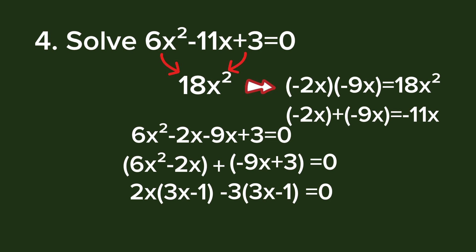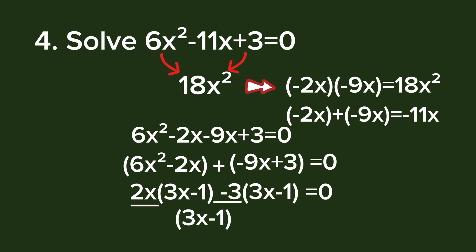We can see a common binomial factor in this new equation: (3x - 1). We place this common binomial factor on the left, and the remaining factor is (2x - 3) beside it, indicating equals zero. We now have the two factors: (3x - 1)(2x - 3) = 0.